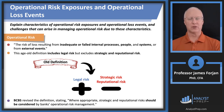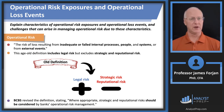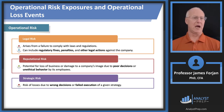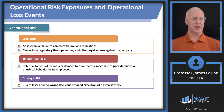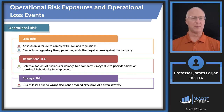The point of all that is to be able to make a determination on the exam of when it is appropriate for strategic and reputational risk to be considered. Legal risk includes regulatory fines and penalties. Reputational risk involves poor decisions or unethical behavior. Strategic risk involves wrong decisions or failed execution of a given strategy — essentially poor capital budgeting decision making. Those of you who read the Wall Street Journal know that CEOs and CFOs are fired all the time because of that.